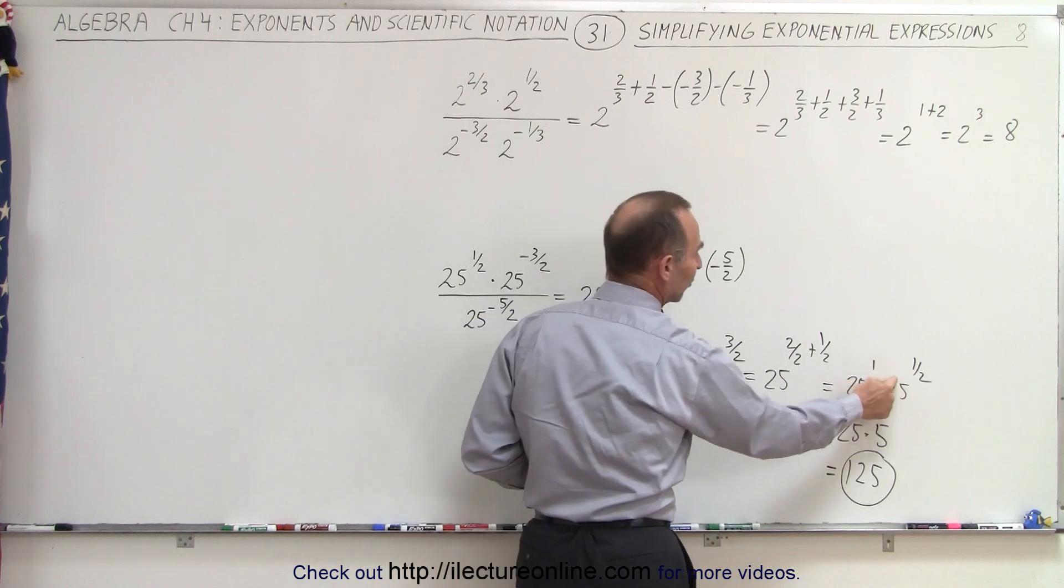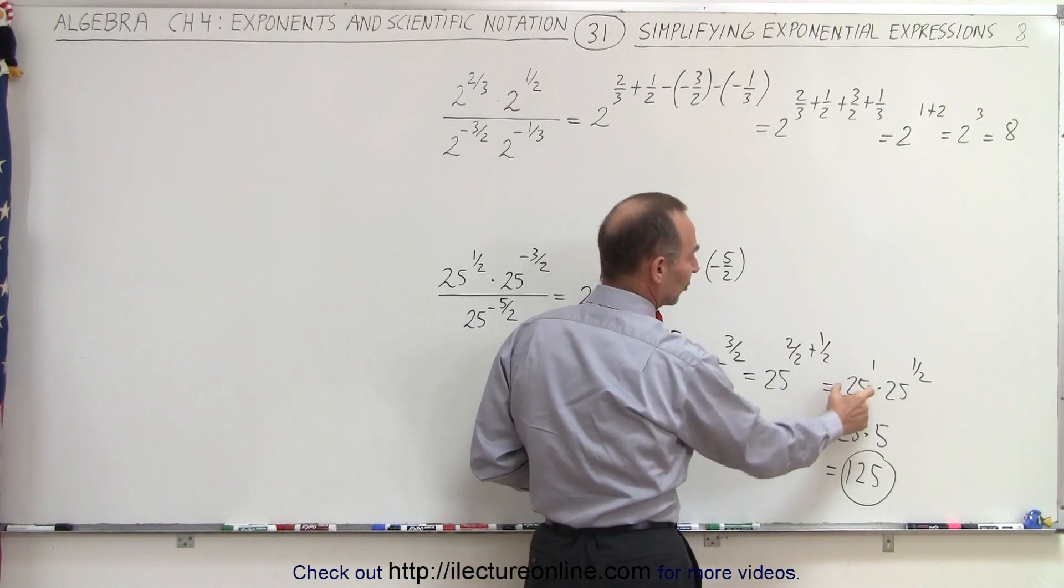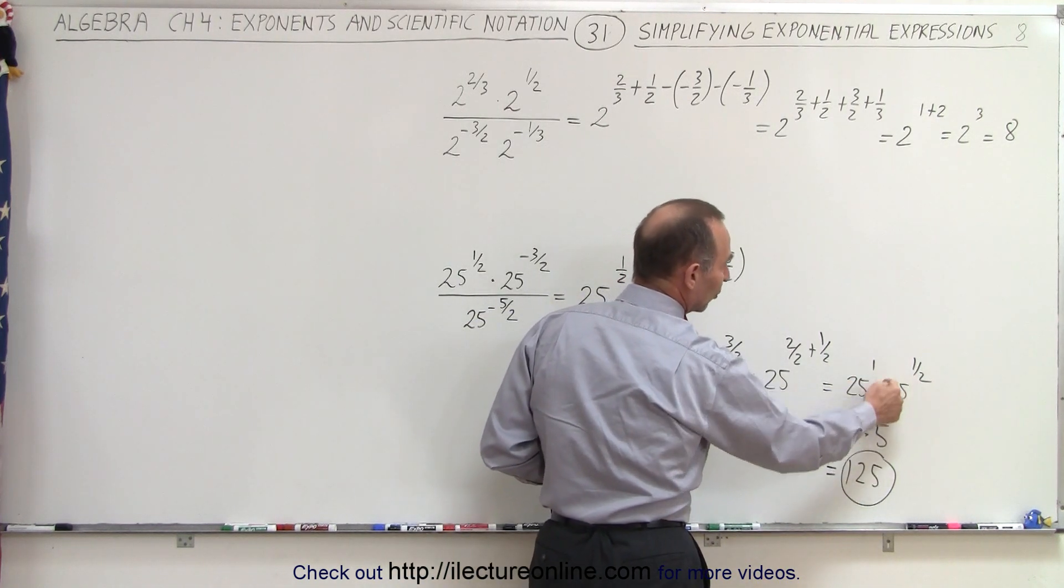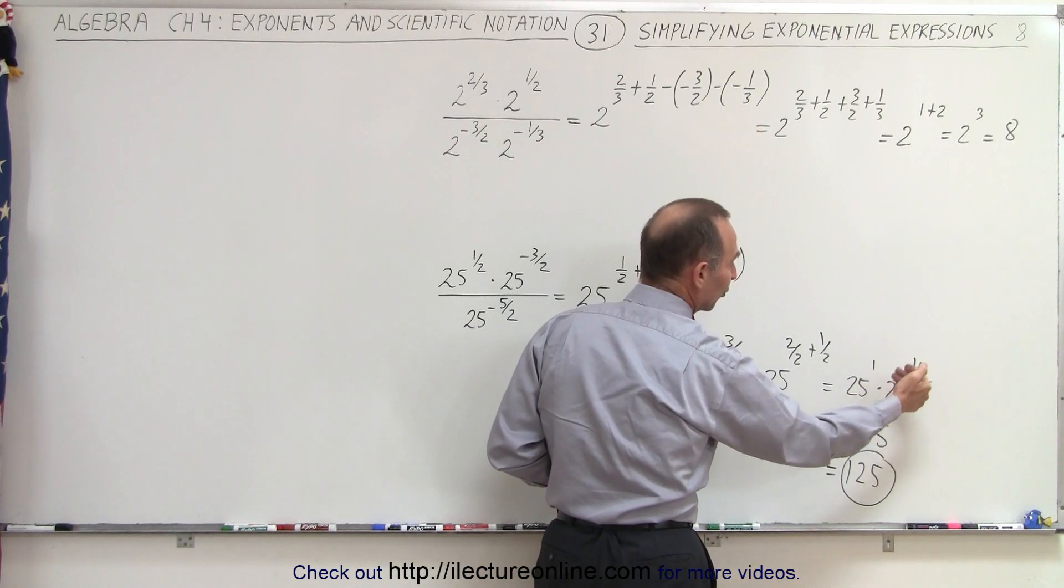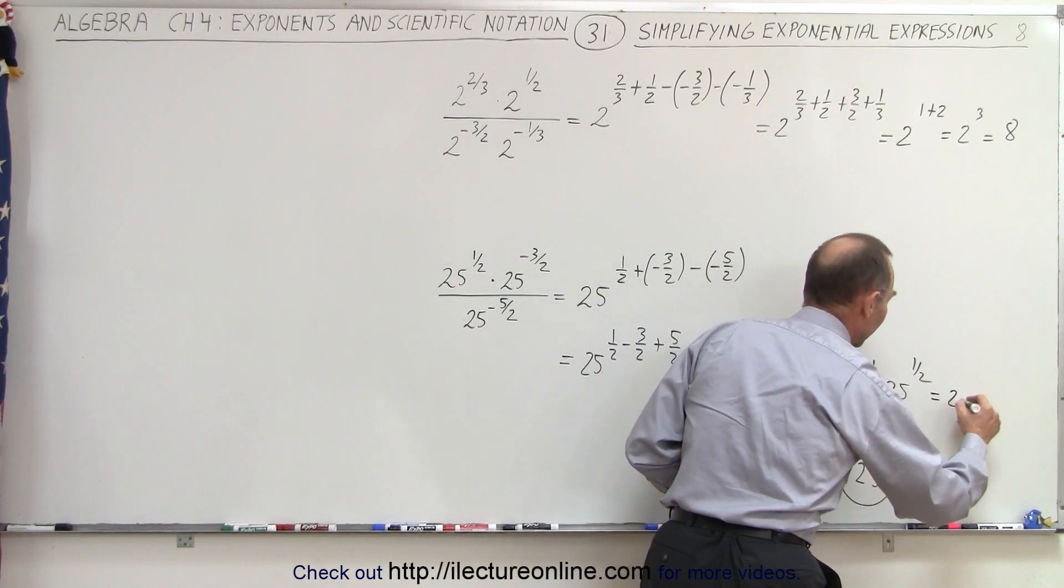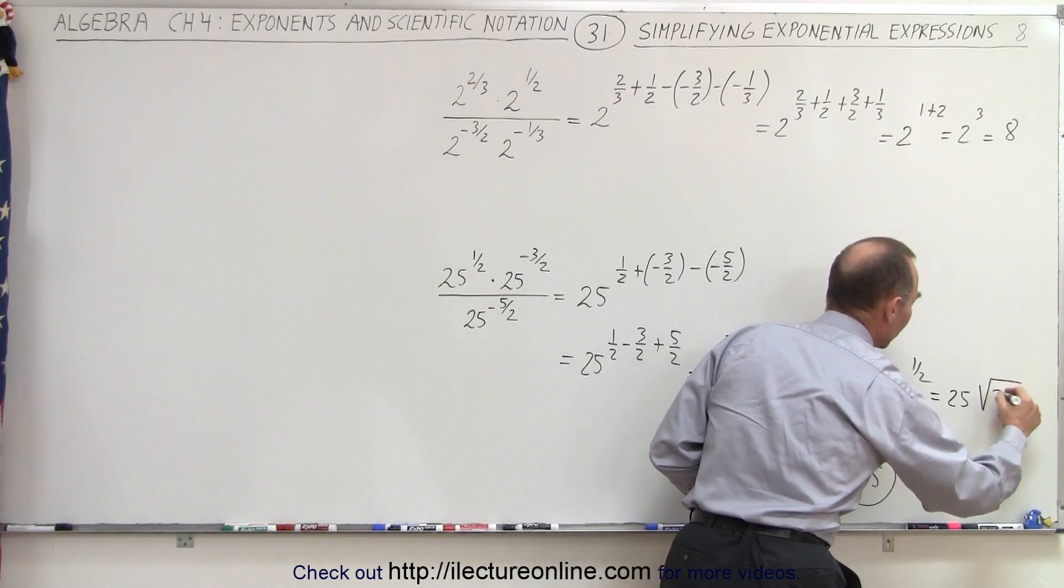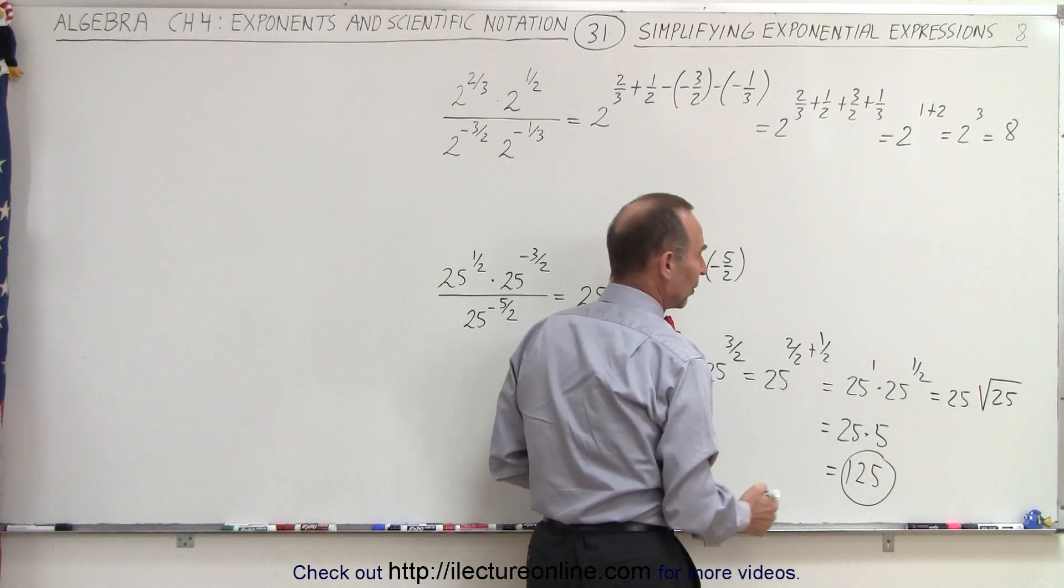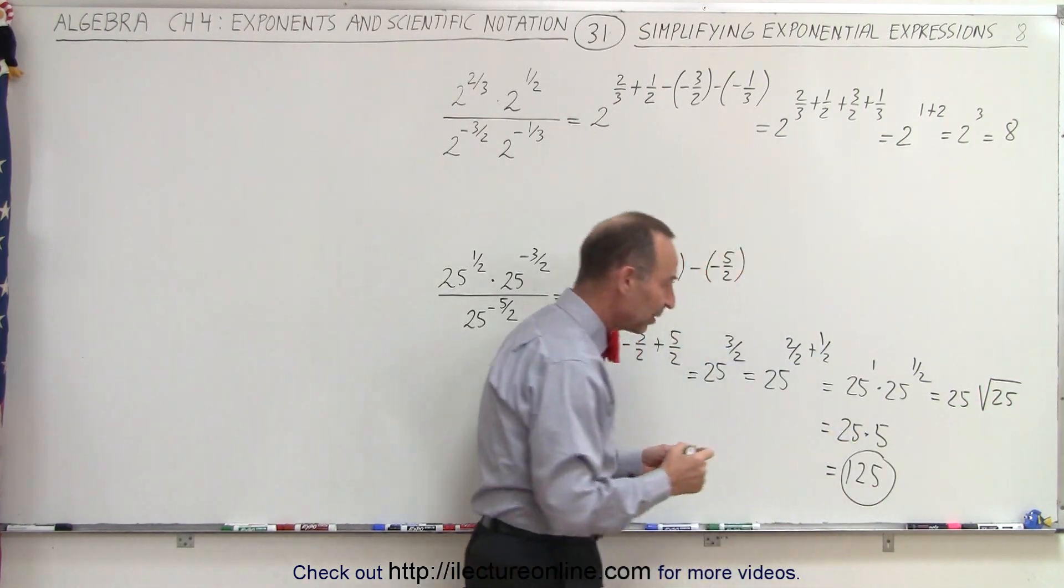25 to the 1st power times 25 to the 1 half power, which is 25 times 25 to the 1 half power, the same as the square root of 25. This could be written as 25 times the square root of 25, same thing, which is equal to 5. And then we simply multiply.